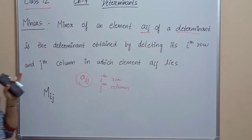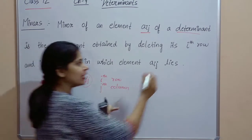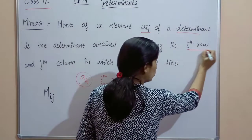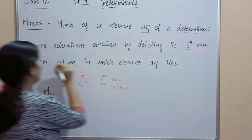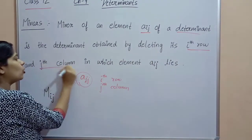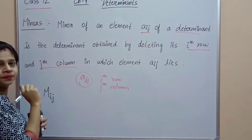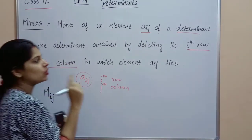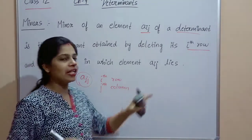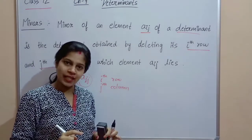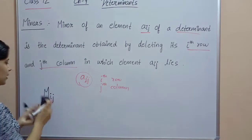So how will it come? By deleting the i-th row and j-th column in which the element Aij lies. Okay? For example, let's see.